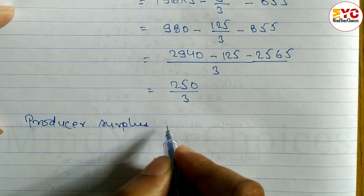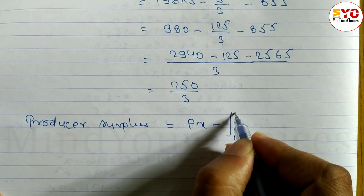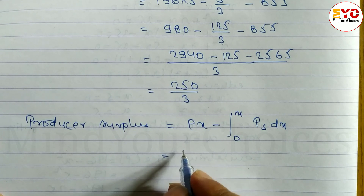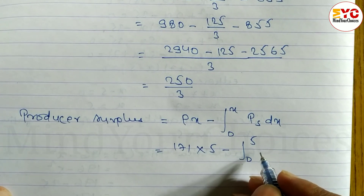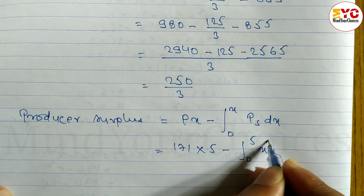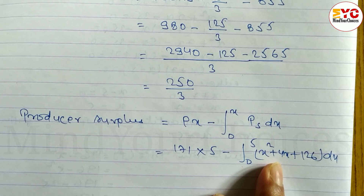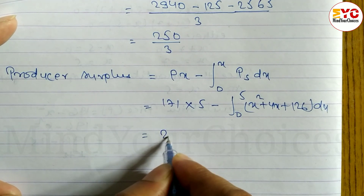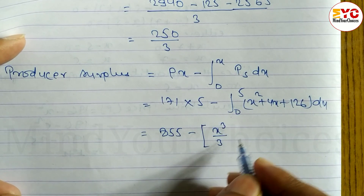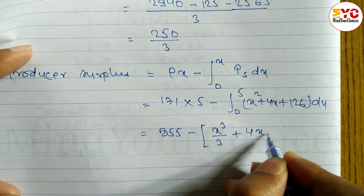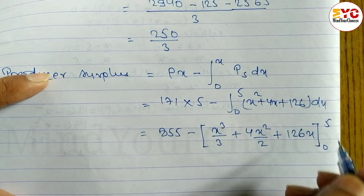Now producer surplus. Producer surplus relates to goods and services that the producer supplies. Its formula is: PS equals Px minus the integral from 0 to x of PS dx. P equals 171, x equals 5. So 171 times 5 minus the integral from 0 to 5 of (x squared plus 4x plus 126) dx. Integration gives: x cubed by 3 plus 4x squared by 2 plus 126x, evaluated from 0 to 5.